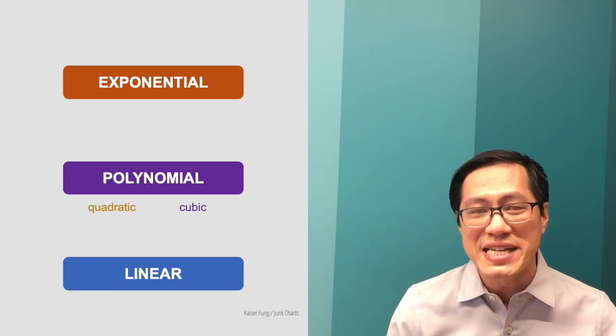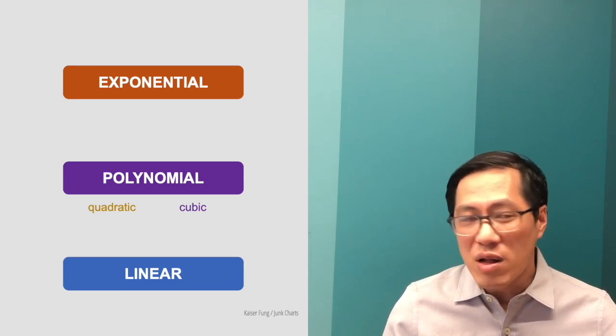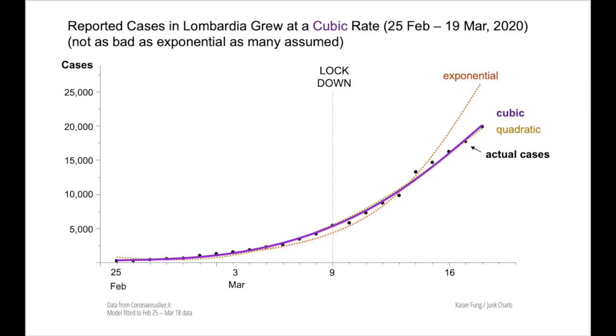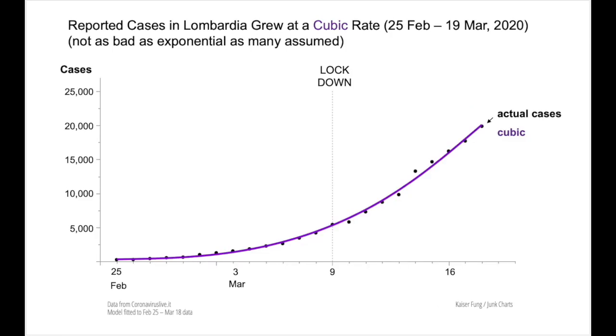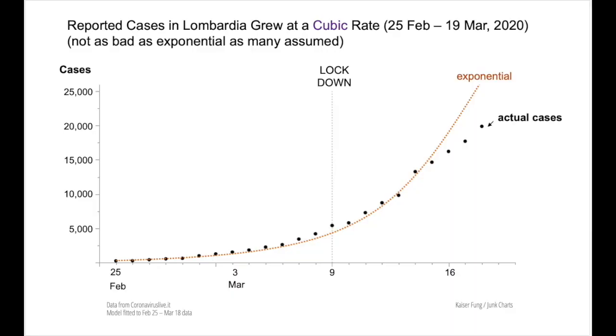With the data I can build models of the growth rate. I considered three main candidates: exponential, quadratic, and cubic. Quadratic and cubic belong to a class known as polynomial — there is a huge space between linear and exponential, and polynomial models sit in between. Much to my surprise, the best model for the growth curve in Lombardia was not the exponential — it is the cubic, the purple line on the chart. The exponential model eventually overestimates the number of cases, as you can see the orange line pulling away from the black dots, which represent the actual case count.